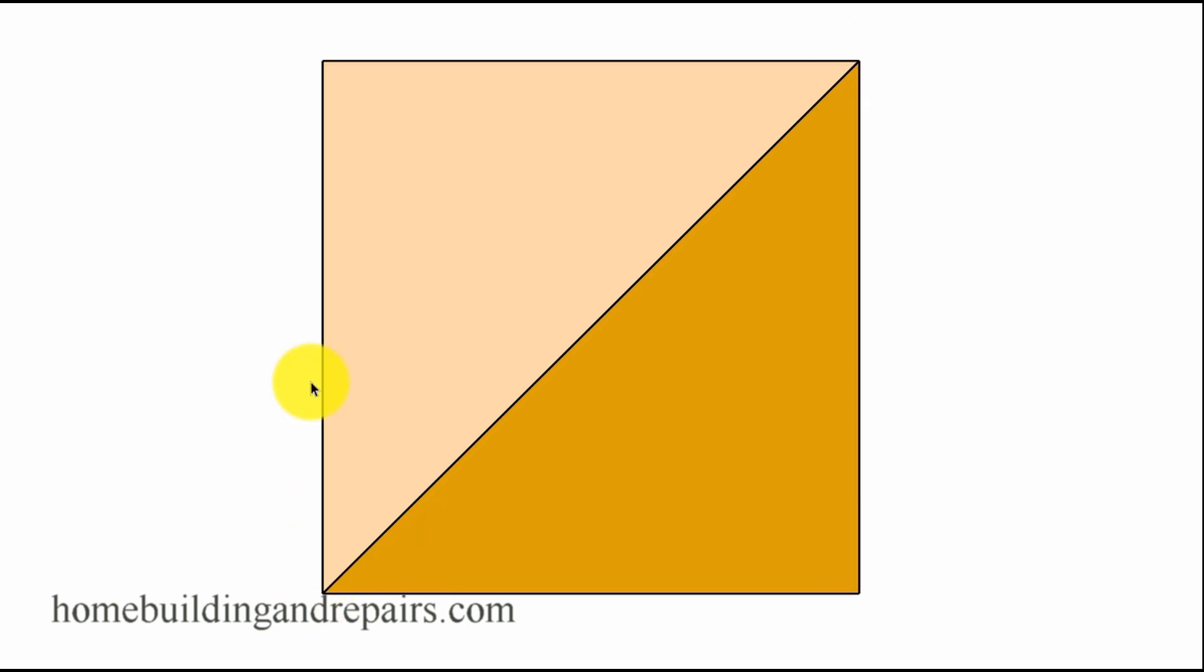Not a rectangle. A square is something with equal sides and 90 degree angles for every corner. A rectangle would be something if you had a 5 foot side and this one here would be 8 foot, different sides.